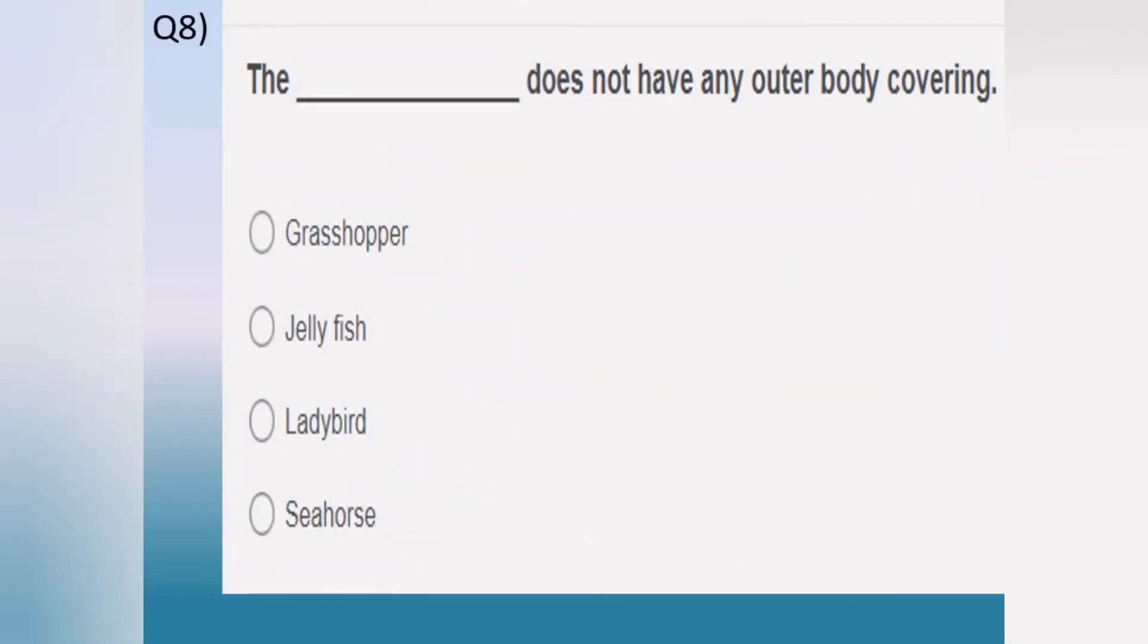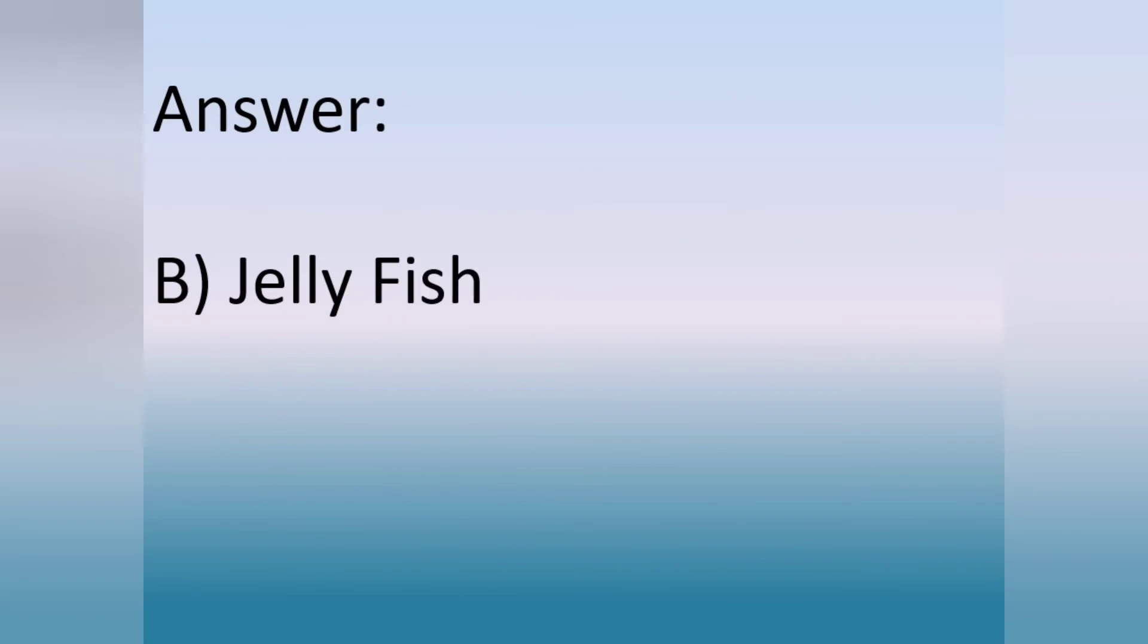Question number 8. The dash does not have any outer body covering. Option A. Grasshopper. Option B. Jellyfish. Option C. Ladybird. Option D. Seahorse. The answer is option B, jellyfish.